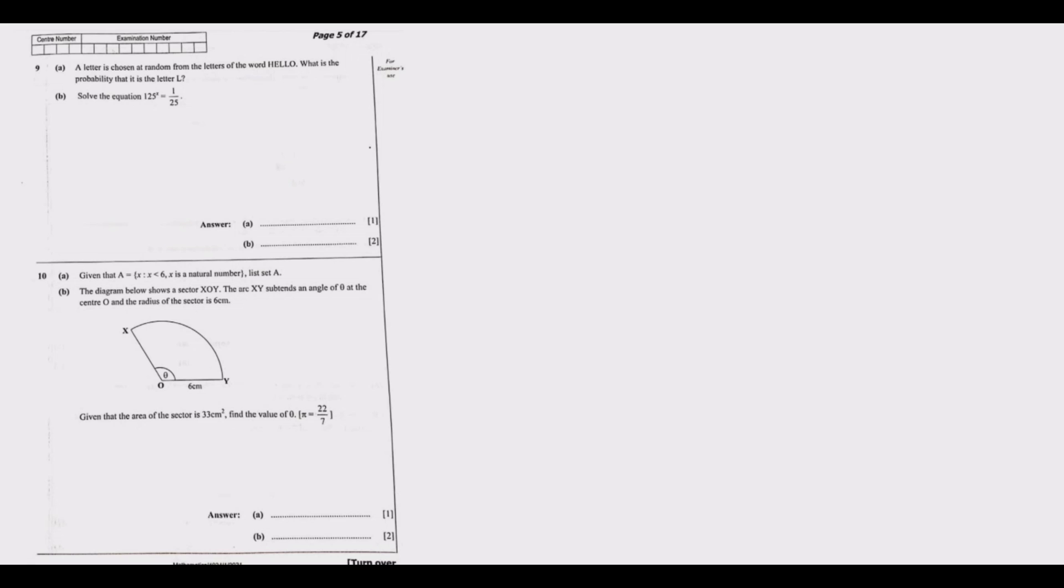What is the probability that it is the letter L? Okay, so we have the word HELLO. In this word, what you notice here is we can break down the letters. So we have H, we have E, then we have L, then we have O. So these are the four unique letters that make up this word.